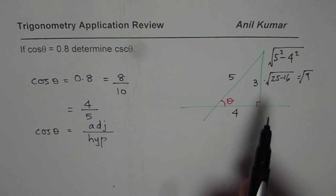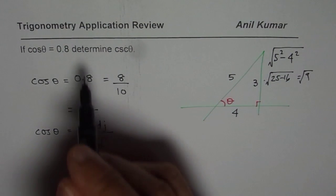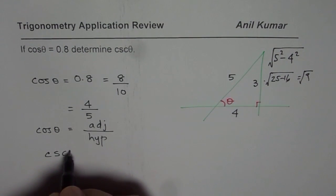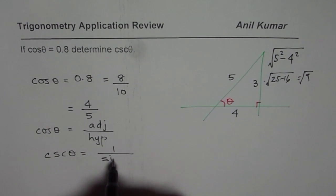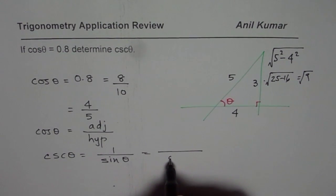But anyway, you understand the method. How to find your right triangle? Now, answer the question. We want to know cosecant θ. So cosecant θ is what? It is 1 over sine, right? And sine is what? Sine is opposite side over hypotenuse.